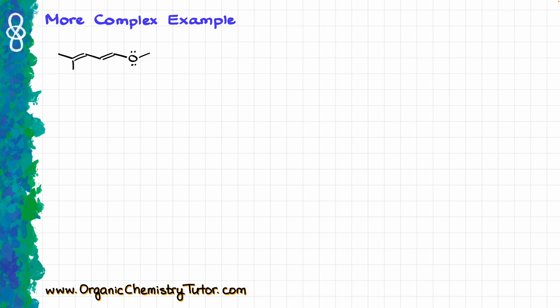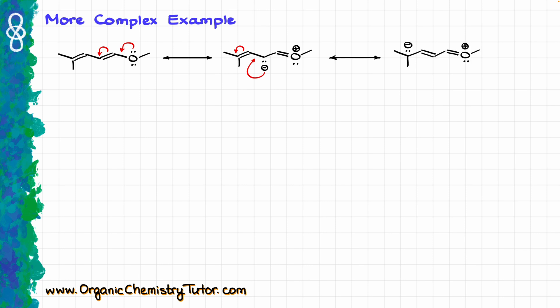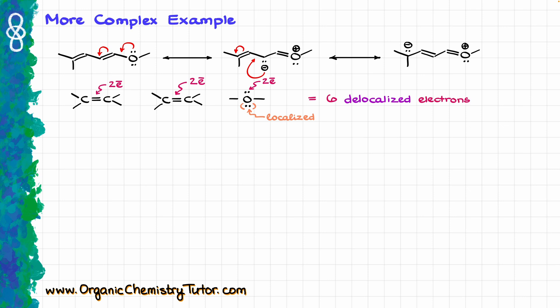Here is another example that is a little more difficult. To draw my resonance structures, first I can take an electron pair from the oxygen and push it towards my double bond, producing the following resonance structure. Then from there I take the electron pair now on the carbon and push it towards the next double bond, giving the next resonance contributor. In this case I had two electrons from one carbon-carbon double bond, two more from another double bond, and one electron pair on oxygen was used in resonance — so one electron pair was delocalized.